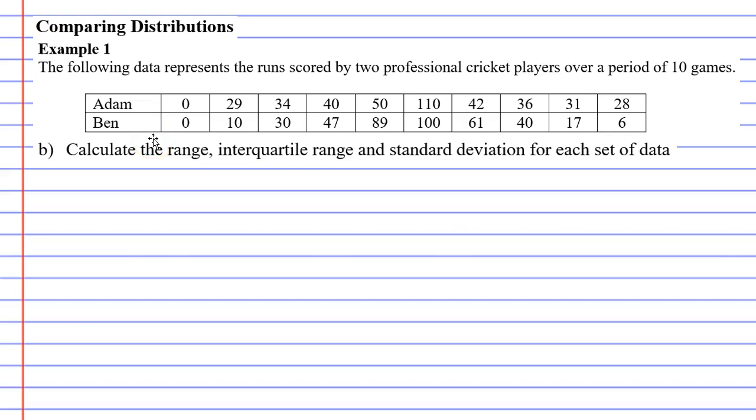So what we're going to do is we need to write the numbers in order to calculate the interquartile range. Actually we might just calculate the range first because they don't need to be in order for that. So if I calculate the range for Adam and the range for Ben, all I do is go biggest number minus smallest number. So for Adam that would be 110 minus 0 which is 110 and for Ben that would be 100 minus 0 which is 100.